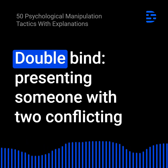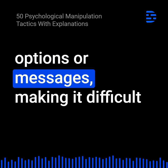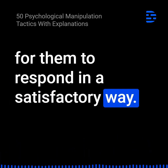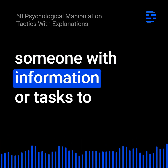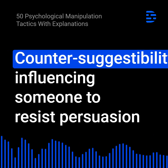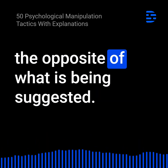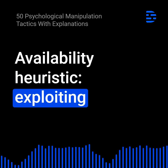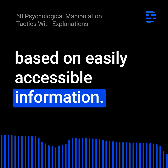41. Double bind: Presenting someone with two conflicting options or messages, making it difficult for them to respond in a satisfactory way. 42. Cognitive overload: Overwhelming someone with information or tasks to prevent them from thinking critically. 43. Counter suggestibility: Influencing someone to resist persuasion attempts by suggesting that they do the opposite of what is being suggested. 44. Availability heuristic: Exploiting someone's tendency to make decisions based on easily accessible information.